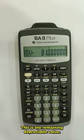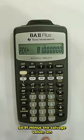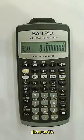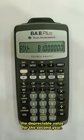This is the remaining depreciable value. So, 91 minus the salvage value 10 gives us 81, the depreciable value for the second year.